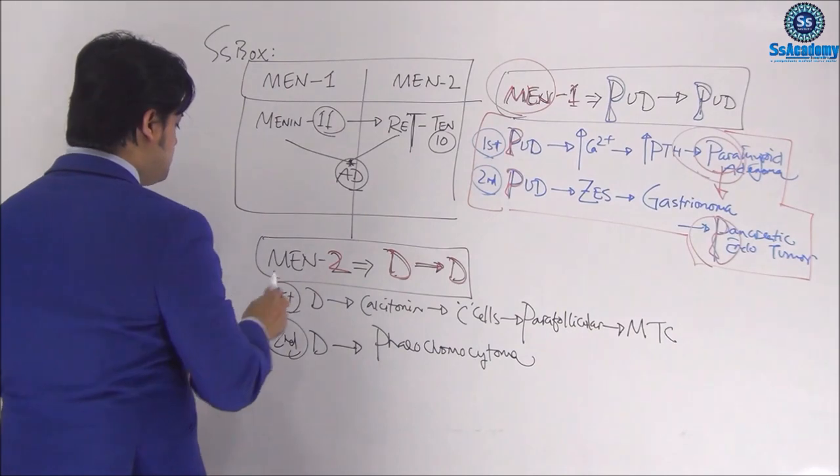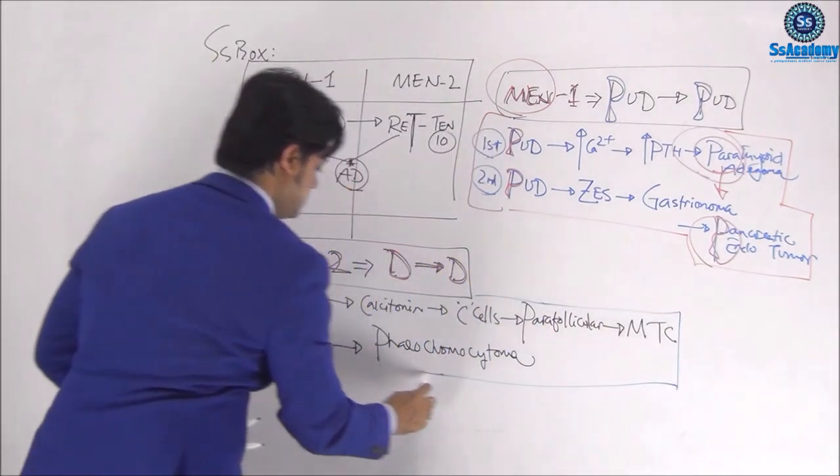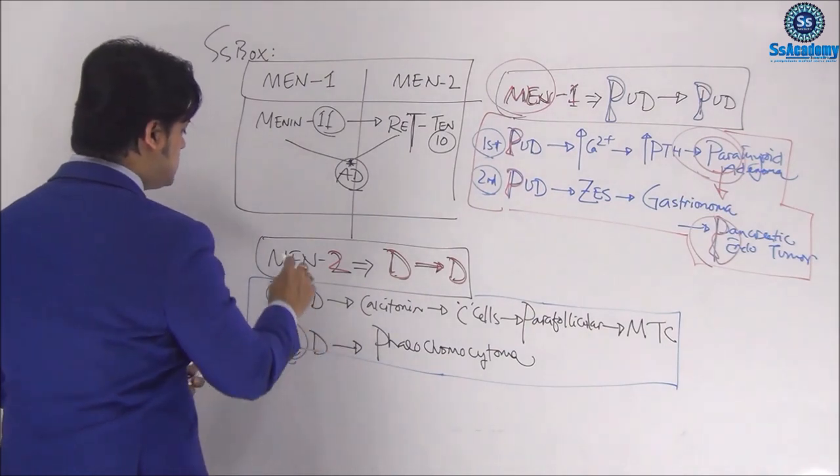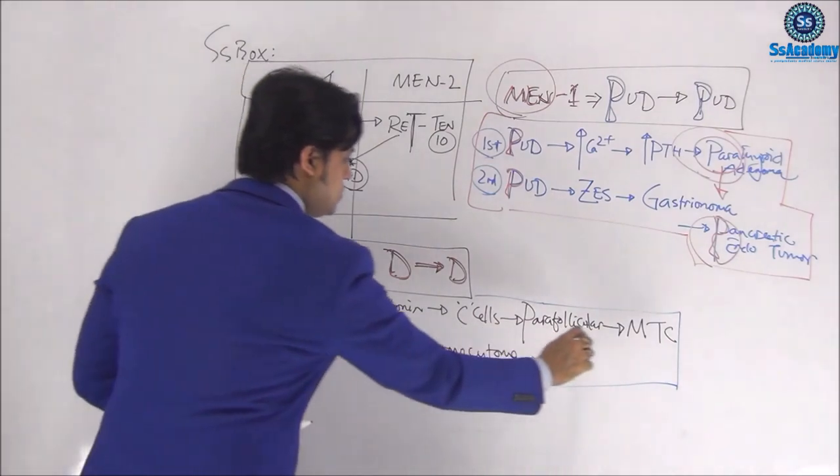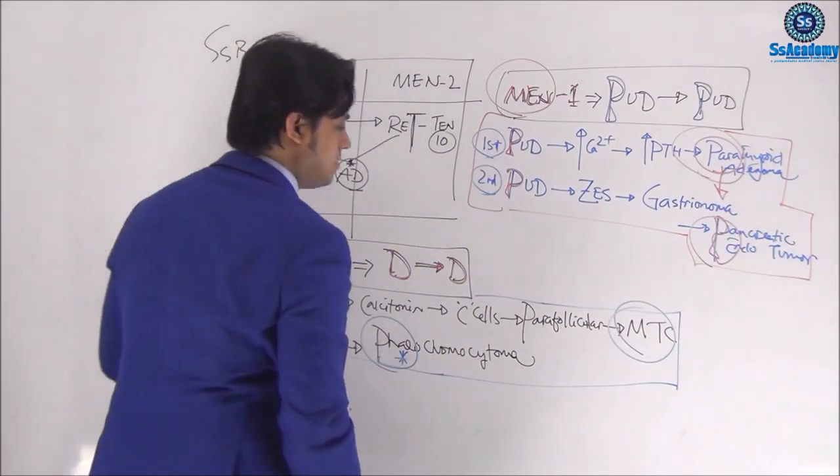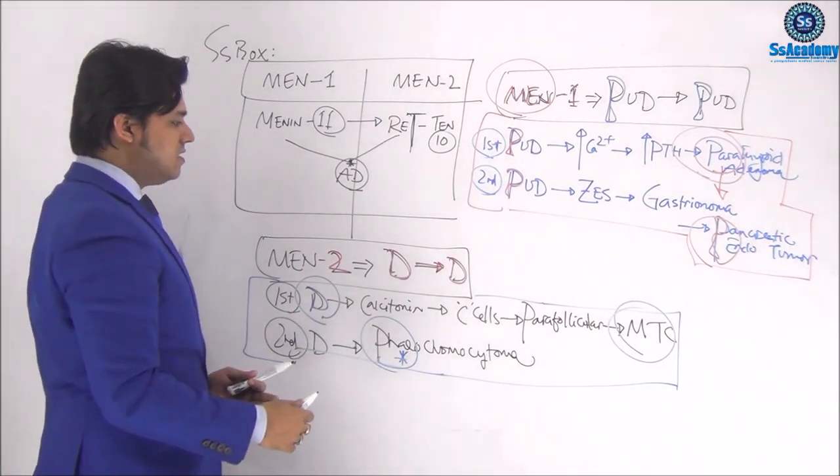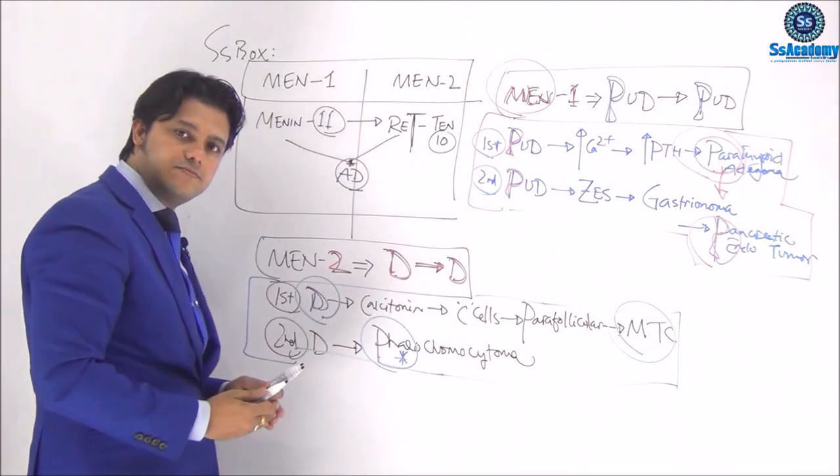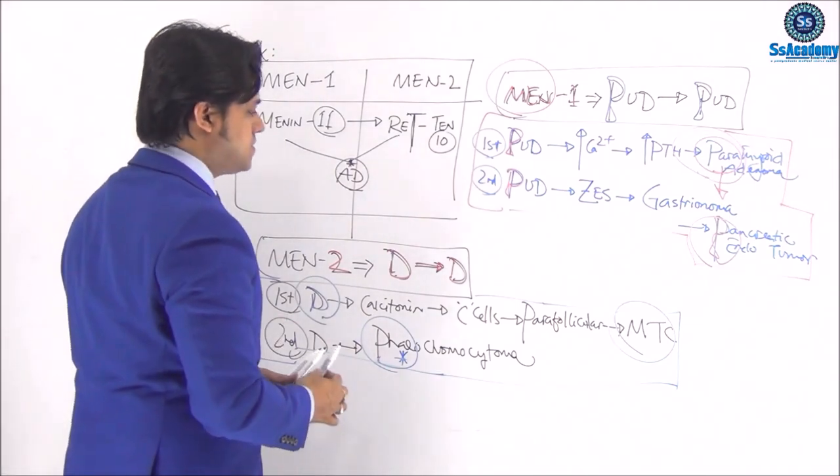So once again, first diarrhea, you need to think calcitonin means medullary thyroid carcinoma. Second diarrhea is due to pheochromocytoma. This is an important box, medullary thyroid carcinoma. So once again, I say the MEN-2 is diarrhea followed by diarrhea. And first diarrhea is due to MTC. Second diarrhea is due to pheochromocytoma.